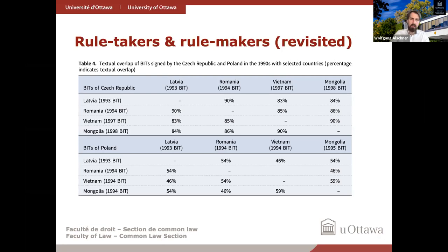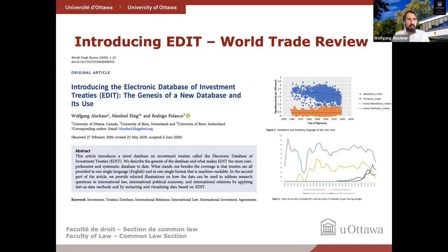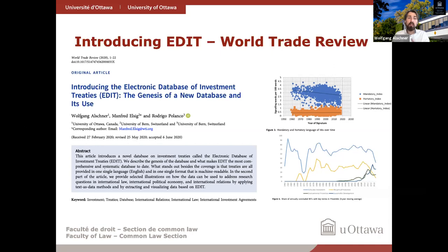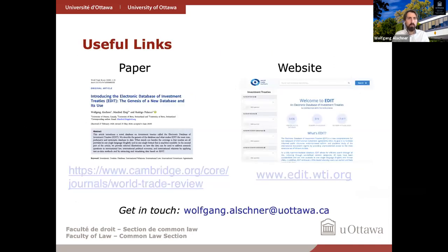So for some reason, the Czech Republic in that universe is a rule-maker — it comes with its template and its partner states essentially sign at the dotted line, resulting in very consistent treaty practice. Poland, a supposedly larger country, has been less successful in implementing consistent treaty practice. While we don't venture into explaining these patterns, what EDIT allows you to do is spot them in the first place. We also look at other trends, such as mandatory versus hortatory language, and specific provisions like preambles integrating different policy considerations as the investment treaty regime matures. Thank you.